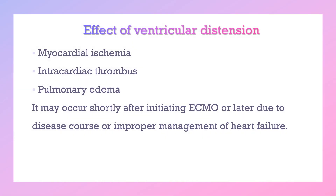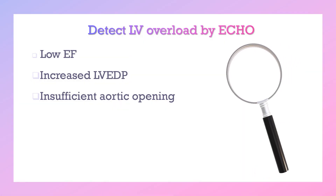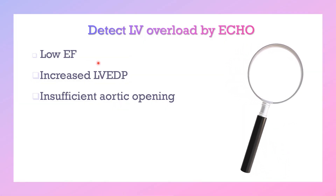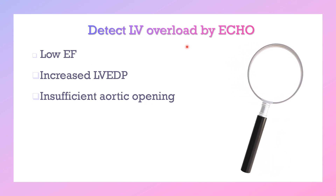What is the effect of ventricular distension? If you have ventricular distension, there will be myocardial ischemia, intra-cardiac thrombus, and pulmonary edema. It may occur after initiating ECMO or later due to disease progression or improper management of heart failure or ECMO itself. Detect left ventricular overload by echo: low ejection fraction, increased left end-diastolic pressure, and insufficient aortic opening.